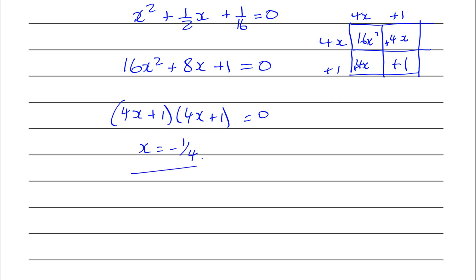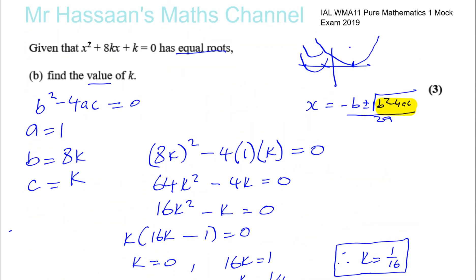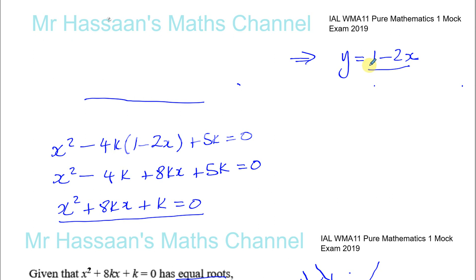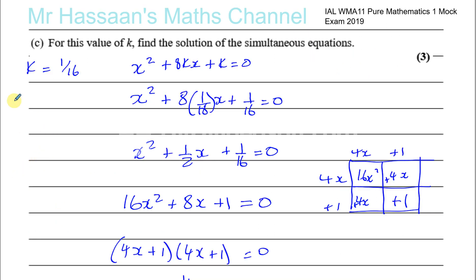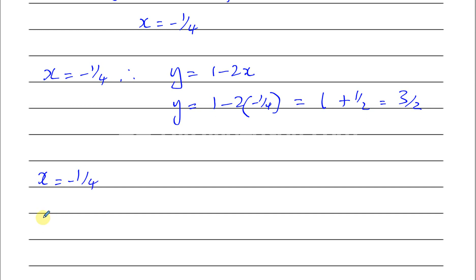x equals minus a quarter is the answer for x, but we also need to find y — when solving simultaneous equations we need both x and y values. Going back to y equals 1 minus 2x, we substitute x equals minus one quarter: y equals 1 minus 2 times minus one quarter, which is 1 plus one half, which equals 3 over 2. So the solution is x equals minus one quarter, y equals 3 over 2. There's only one pair of solutions because we chose k such that the equation has equal roots.